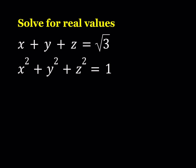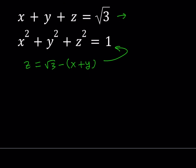In order to manipulate this equation, from the first one I'm going to isolate z. Z can be written as square root of 3 minus the quantity x plus y. And then I'm going to substitute that into the second equation, giving me x squared plus y squared plus the quantity square root of 3 minus (x plus y), quantity squared, equals 1.